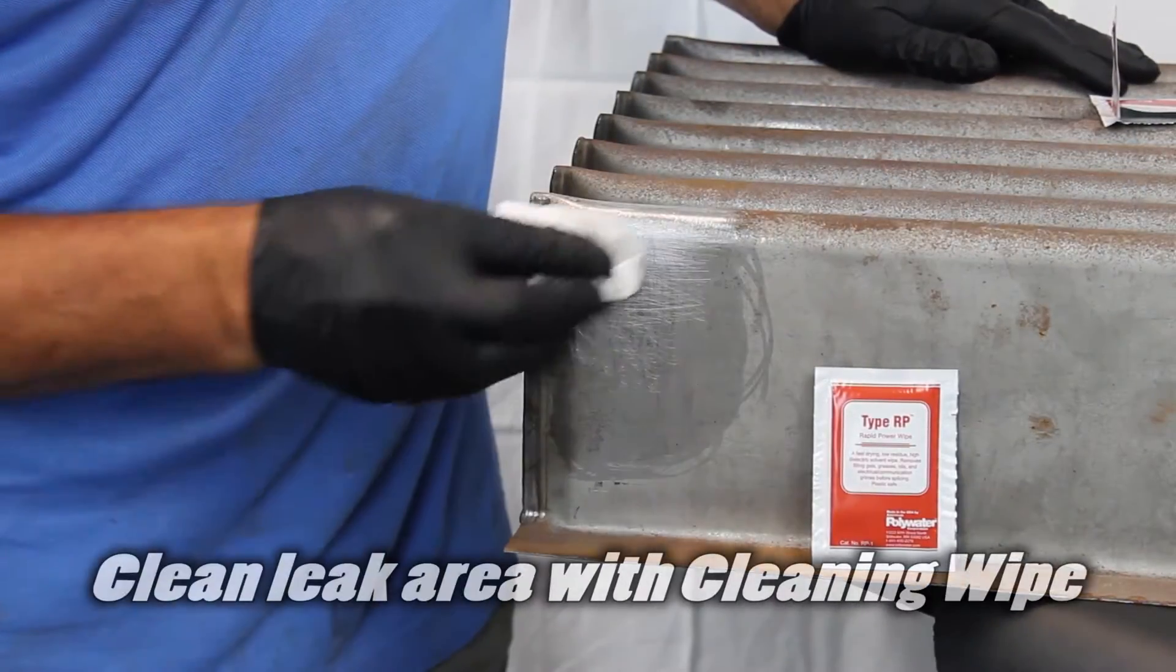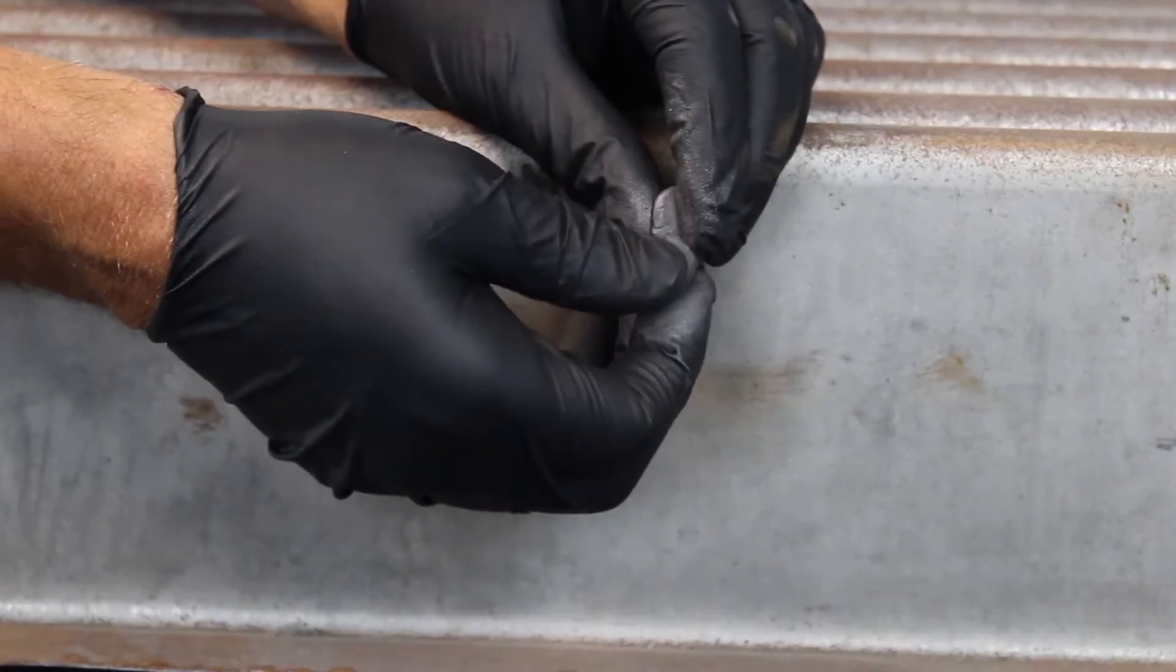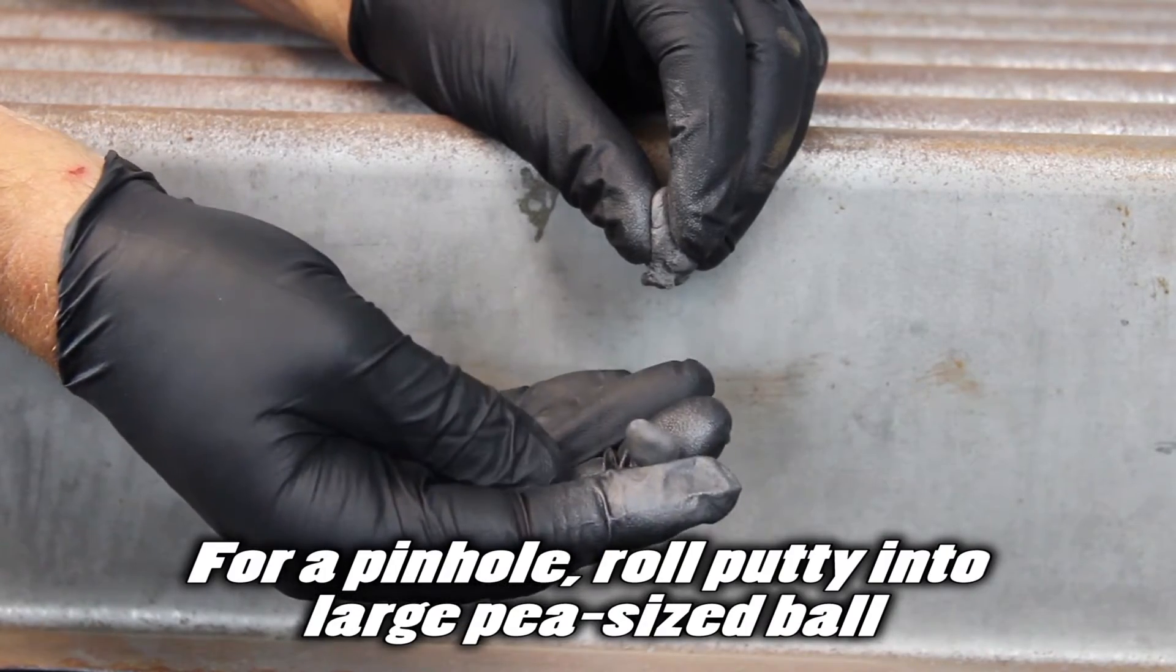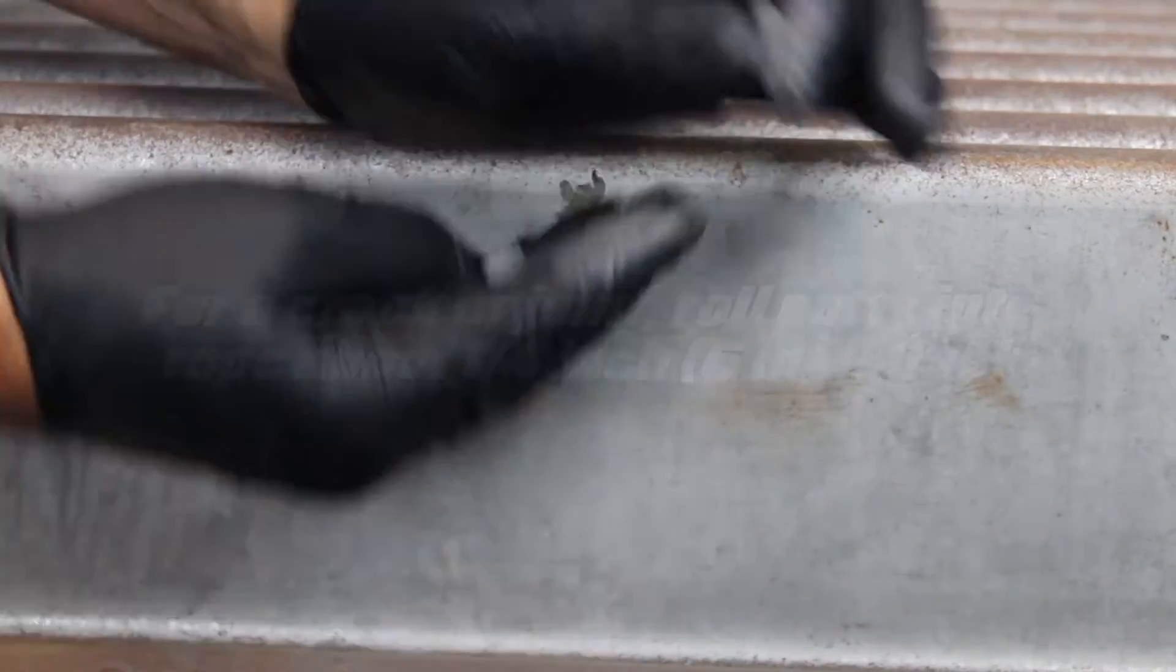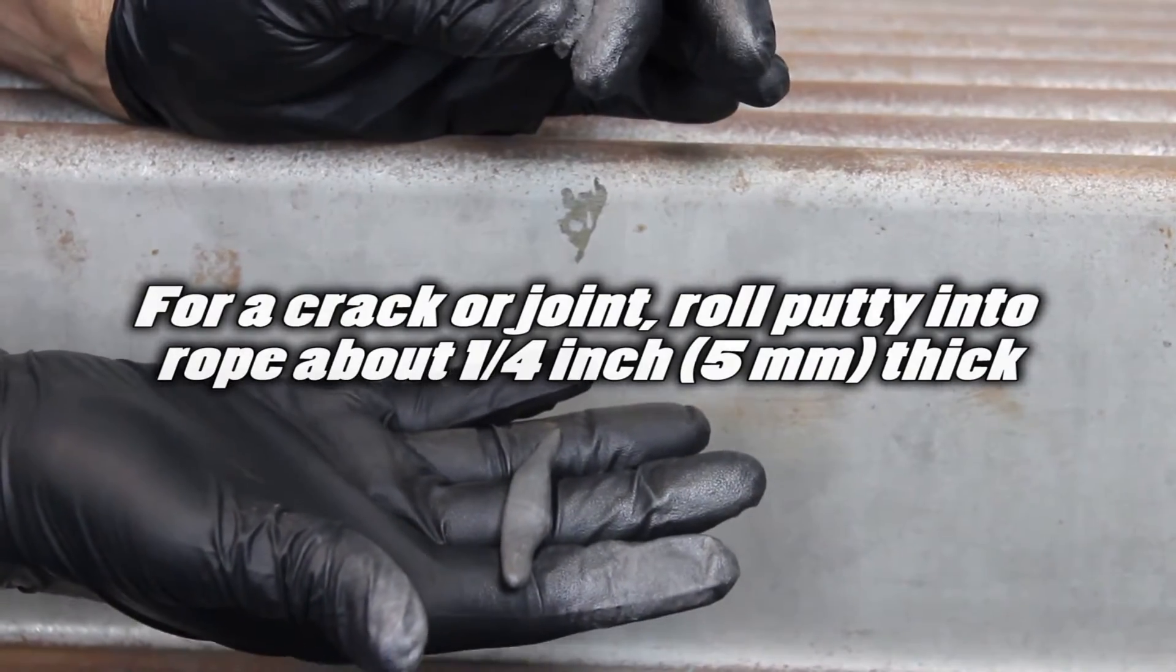Next, clean the leak area with the cleaning wipe provided. Use just the amount of putty needed. For a pin hole, roll the putty into a large pea-sized ball. For a crack or joint, roll the putty into a rope about a quarter inch, five millimeters thick.